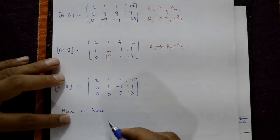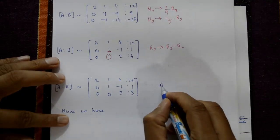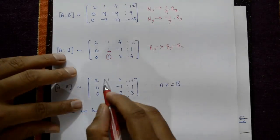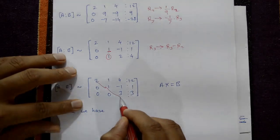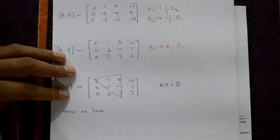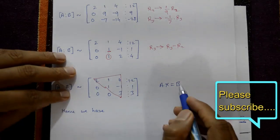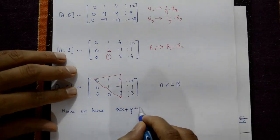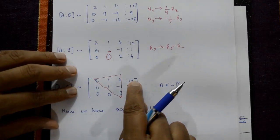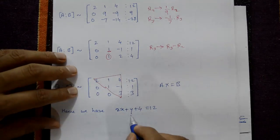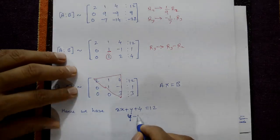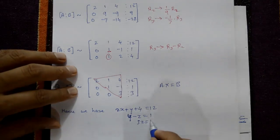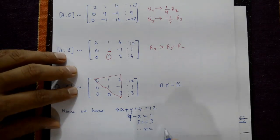Now matrix A is in upper triangular form. Writing in equation form AX = B: first equation is 2x plus y plus 4z equal to 12, second equation is y minus z equal to 1, and third equation is 3z equal to 3. Therefore, z = 1.